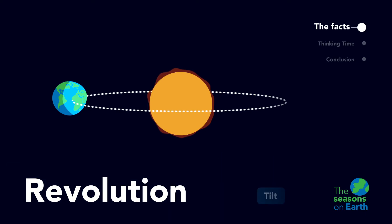Revolution is how, over the course of 365 days, or one year, the earth completes one full trip around the sun. This movement is also called earth's orbit around the sun.